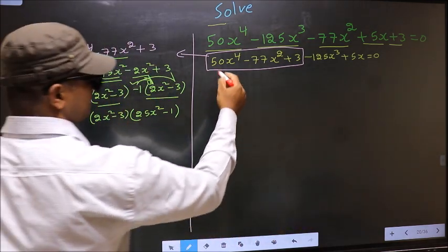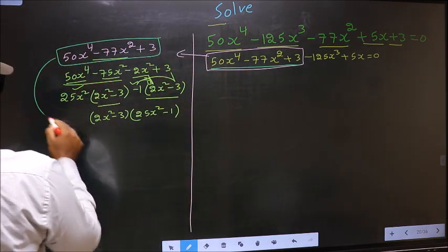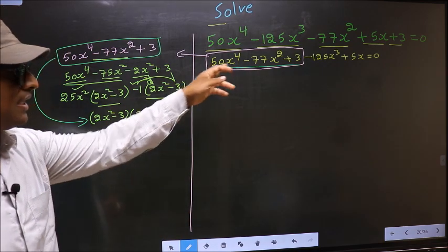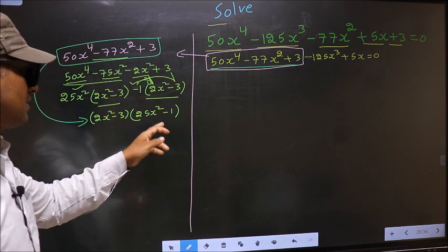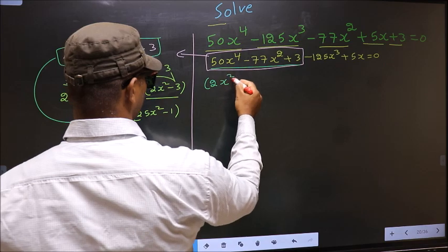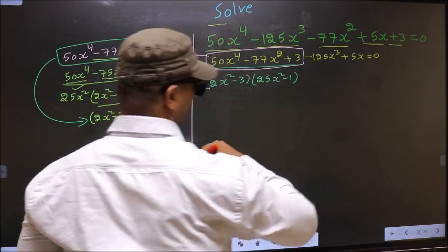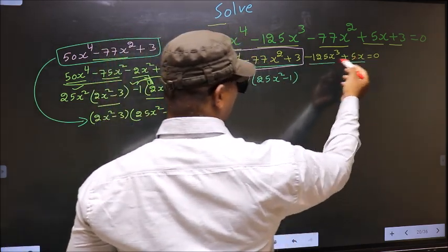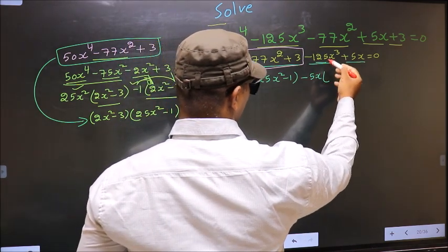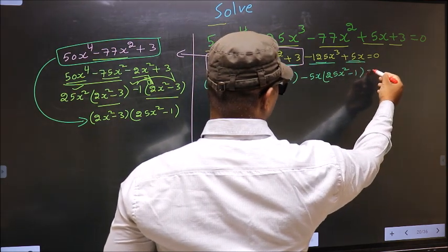In place of these 3 terms we write the factored form. So this equation now becomes (2x² minus 3)(25x² minus 1). From the remaining 2 terms — minus 125x³ plus 5x — what can be taken out common is minus 5x, giving minus 5x times (25x² minus 1) equal to 0.